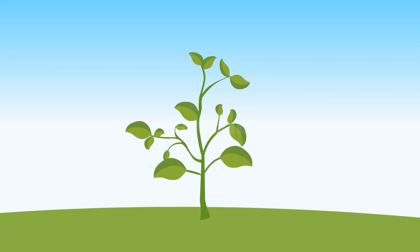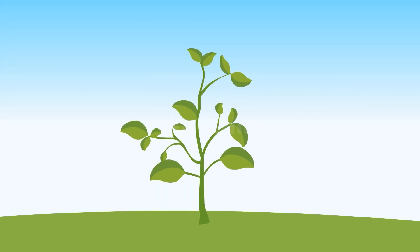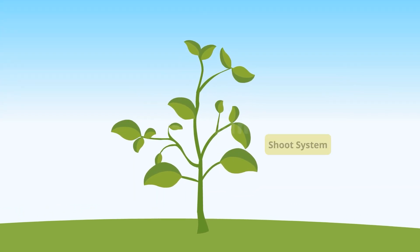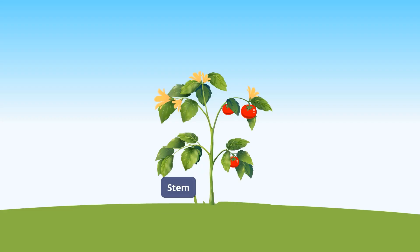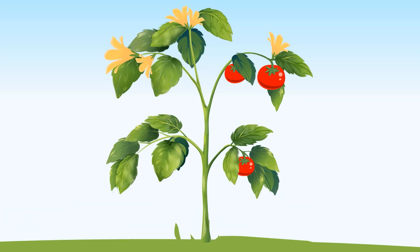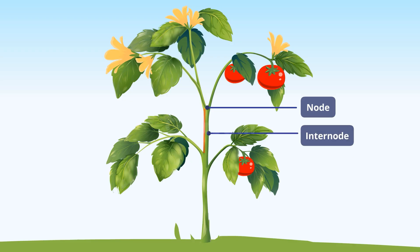The part of the plant that grows above the ground is called the shoot system. The stem of the plant bears leaves, flowers and fruits. Roots arise from the lower end of the stem. The branches arise from nodes. The space between two nodes is called an internode.